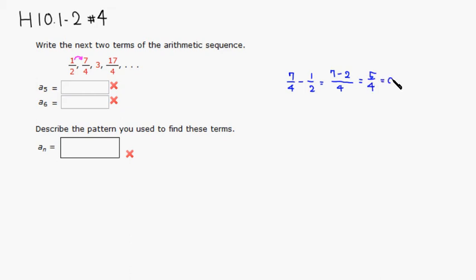So this is our a value. So every time you go to the next term, you have 5 fourths. You add 5 fourths.